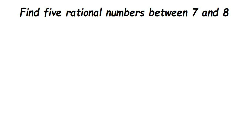Hello everyone. This is a question from rational numbers. The question is: find five rational numbers between 7 and 8. This type of question is really important. In place of 7 and 8 they can give any other number — a rational number, a whole number like 7 and 8, or 3 and 4, anything. So how do we find them?